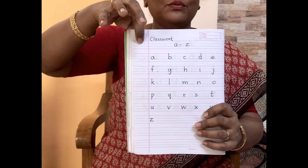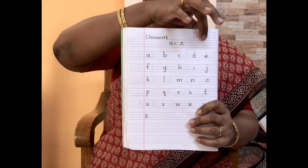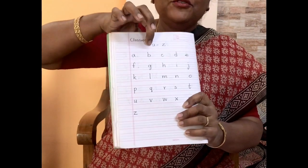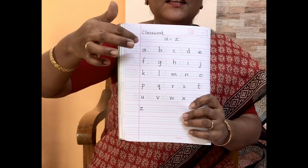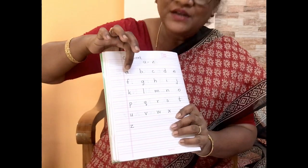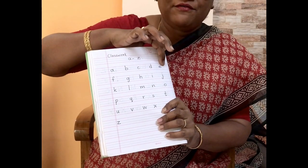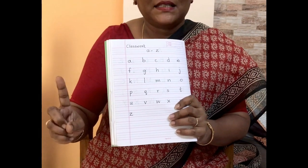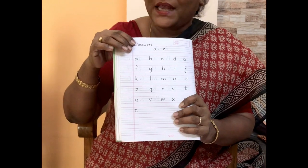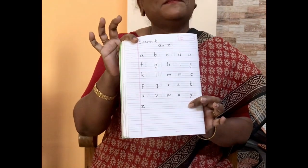Yesterday you wrote capital A to Z — that is your nursery division. Today we continue with the nursery division. Today you will write from small a to z. You will write classwork and date on the corner, and on the first line you will write a to z. Then you will write 5 alphabets in a line. You should write it in pencil — Miss has written it in pen, but you should write it in pencil.